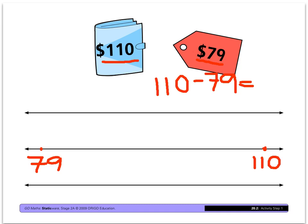And let's just change color quickly. He wanted to know what's the difference between those two numbers? How many jumps from, or what's the jump from $79 to $110? And the way he did it is he took one little jump like this to get, that's plus one, to get onto a nice friendly number which was $80.